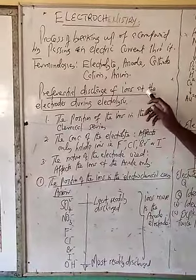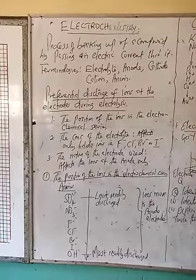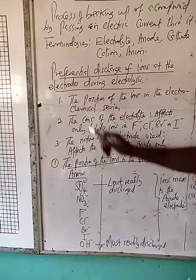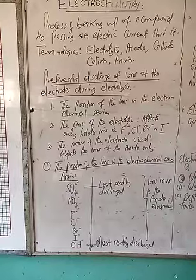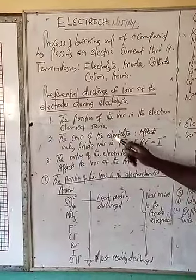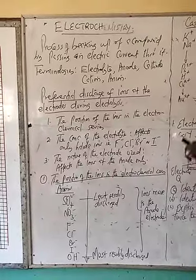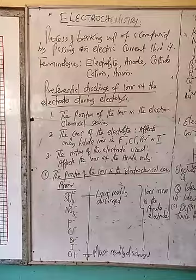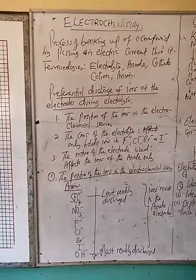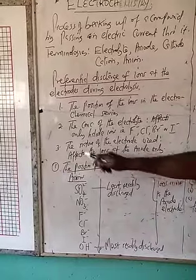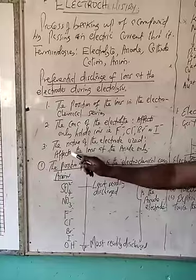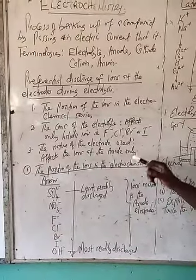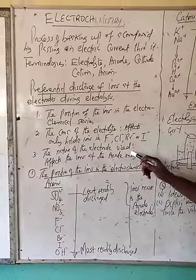Now, preferential discharge of ions at the electrode during electrolysis. We have got factors which affect the selective discharge of ions at the electrodes. The first factor is the position of the ions in the electrochemical series. The second one is the concentration of the electrolyte, and this second factor only affects the halide ions — that is the fluoride ions, chloride ions, bromide ions, and iodide ions — and it does not affect the hydroxide ions, the sulfate, or the nitrate. The third factor is the nature of the electrode used, and this one affects only ions at the anode, such as graphite or platinum.